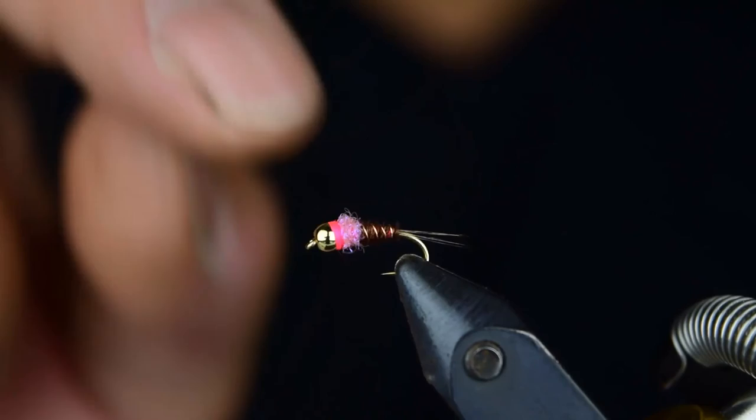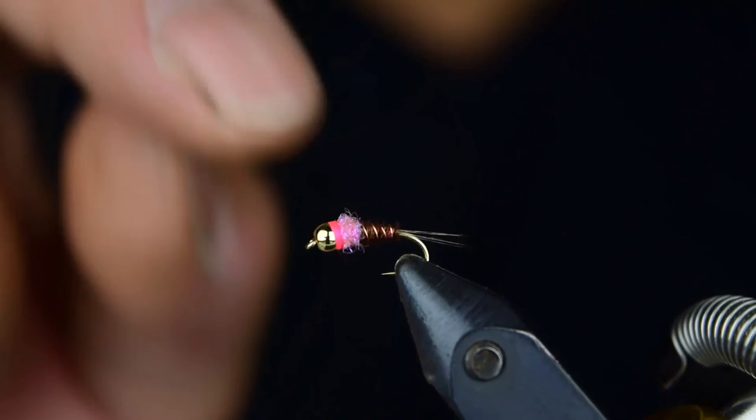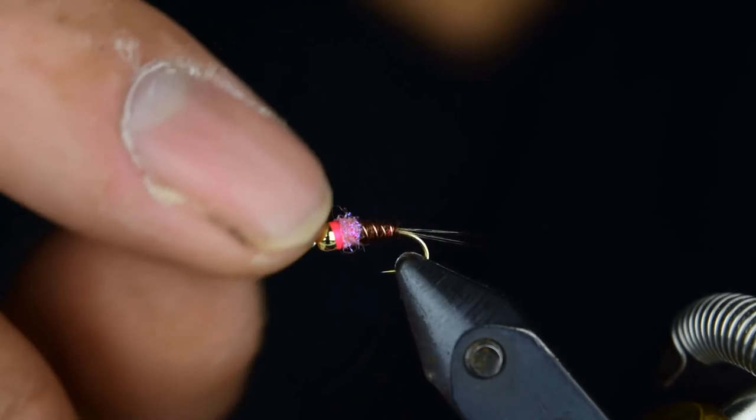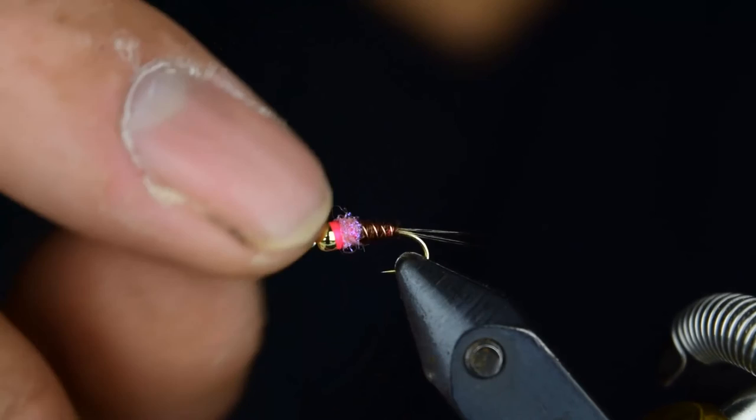And there you go, you got a nice little Frenchy here. Now you can get a brush and brush out these fibers. We do do that, I don't have the brush on me so I can't demonstrate that, but you can brush this out and the buggier you make this fly look, the better it fishes.